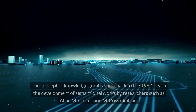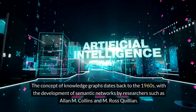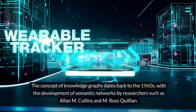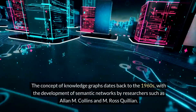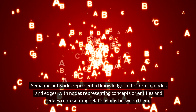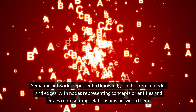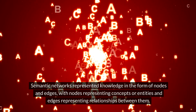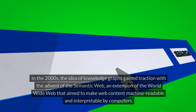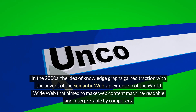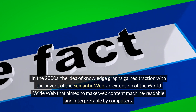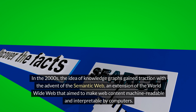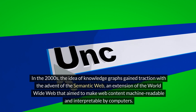History. The concept of knowledge graphs dates back to the 1960s, with the development of semantic networks by researchers such as Alan M. Collins and M. Ross Quillian. Semantic networks represented knowledge in the form of nodes and edges, with nodes representing concepts or entities and edges representing relationships between them. In the 2000s, the idea of knowledge graphs gained traction with the advent of the semantic web, an extension of the World Wide Web that aimed to make web content machine readable and interpretable by computers.